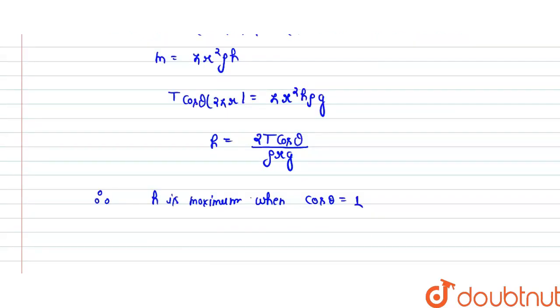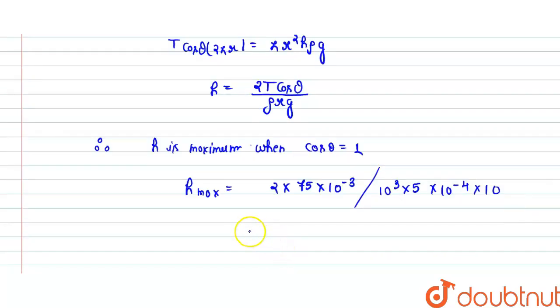h maximum equals 2 × 75 × 10^-3 divided by 10³ × 5 × 10^-4 × 10. So after calculation we get 0.03 meter, which is 3 centimeters.